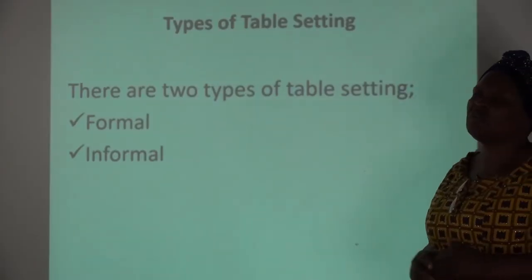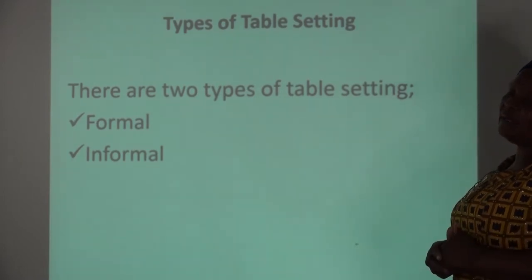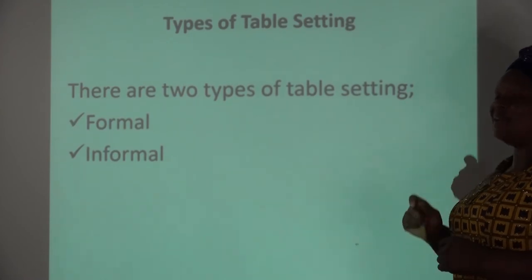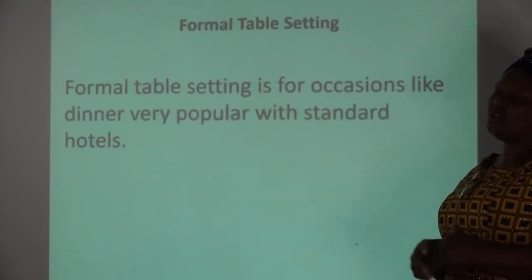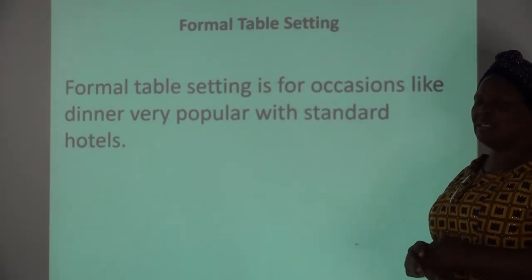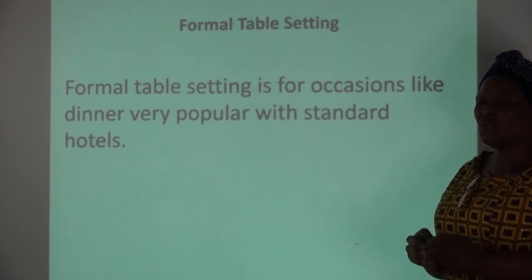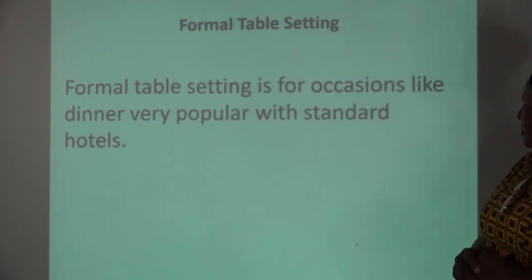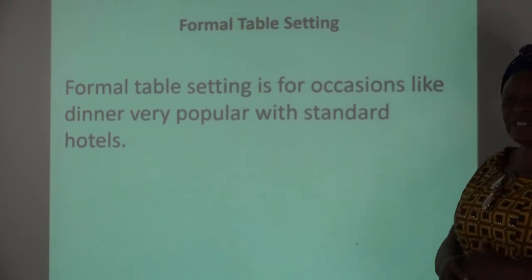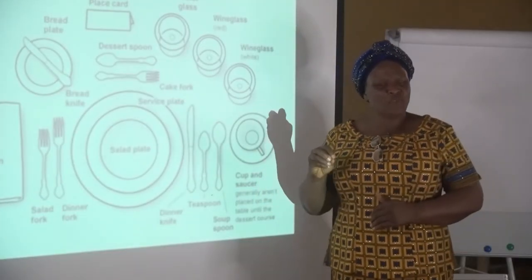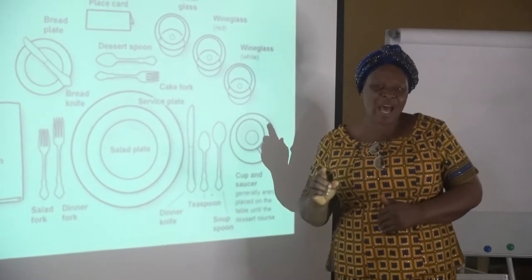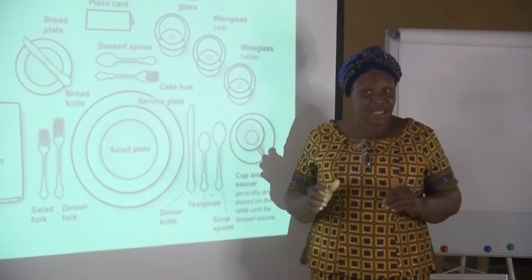Generally, we have two types of table setting. Number one is formal table setting, and number two is informal table setting. Formal table setting is the setting that is mainly done in standard hotels, for occasions like dinner. It is very popular with standard hotels.